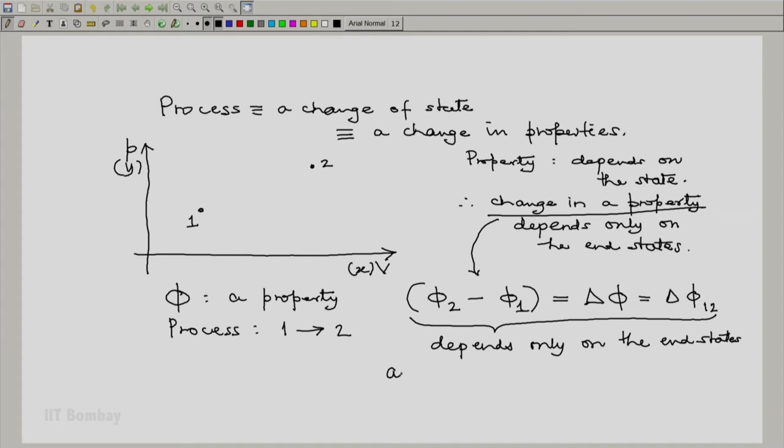And not on the path. Because the path may take different routes from 1 to 2, but so long as the end states are the same, the property phi 2 of the final state and the property phi 1 of the initial state will not be different. And hence the change in property over a process from a fixed initial state to another fixed final state will be the same.